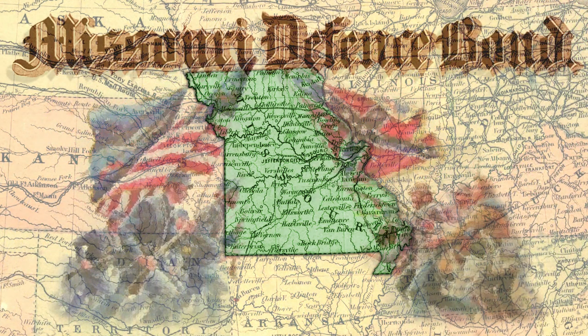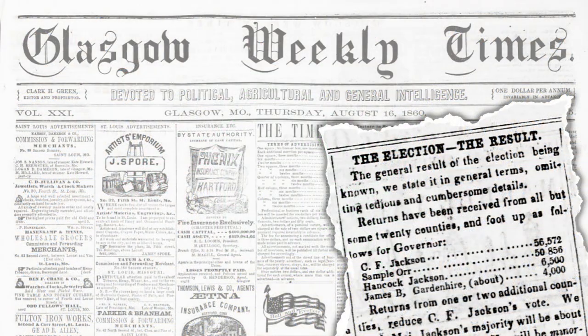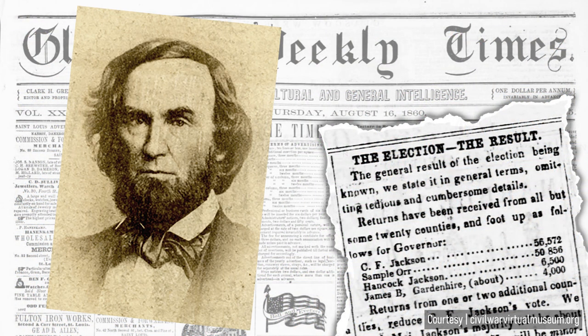The war in Missouri was continuous between 1861 and 1865, with more than 1,200 distinct engagements across the entire state. By the end of the war in 1865, nearly 110,000 Missourians had served in the Union Army and at least 40,000 in the Confederate. Let's get to the Missouri defense bonds origination story. In 1860, Missouri elected pro-slavery Claiborne Fox Jackson as their 15th governor.